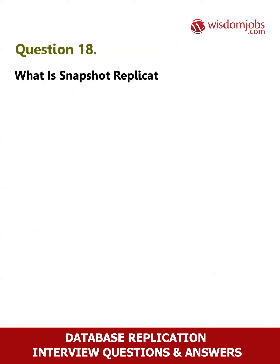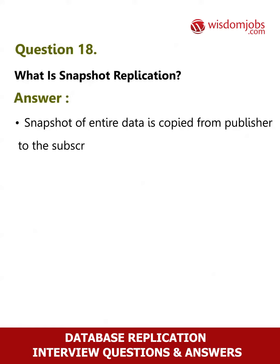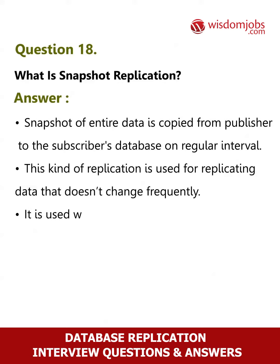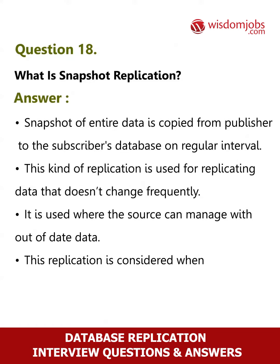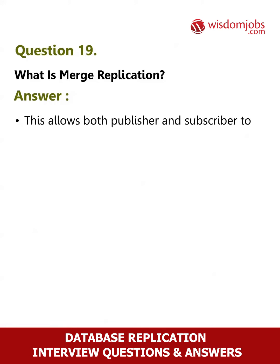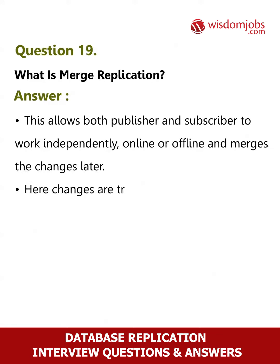Question 18. What is snapshot replication? Answer. A snapshot of entire data is copied from the publisher to the subscriber's database on a regular interval. This kind of replication is used for replicating data that doesn't change frequently. It is used where the source can manage with out-of-date data. This replication is considered when the amount of data to be replicated is small. Question 19. What is merge replication? Answer. This allows both publisher and subscriber to work independently, online or offline, and merges the changes later. Changes are tracked on both publisher and subscriber and then merged.